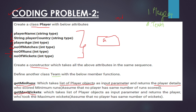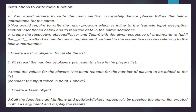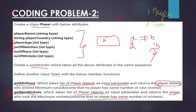The second function is get_maximum_wickets, which also takes a list of player objects as input and returns the details of the player who took the maximum wickets. Similarly, we assume no two players have the same number of wickets — for example, if player A took two wickets, player B must have taken one or three, not two.